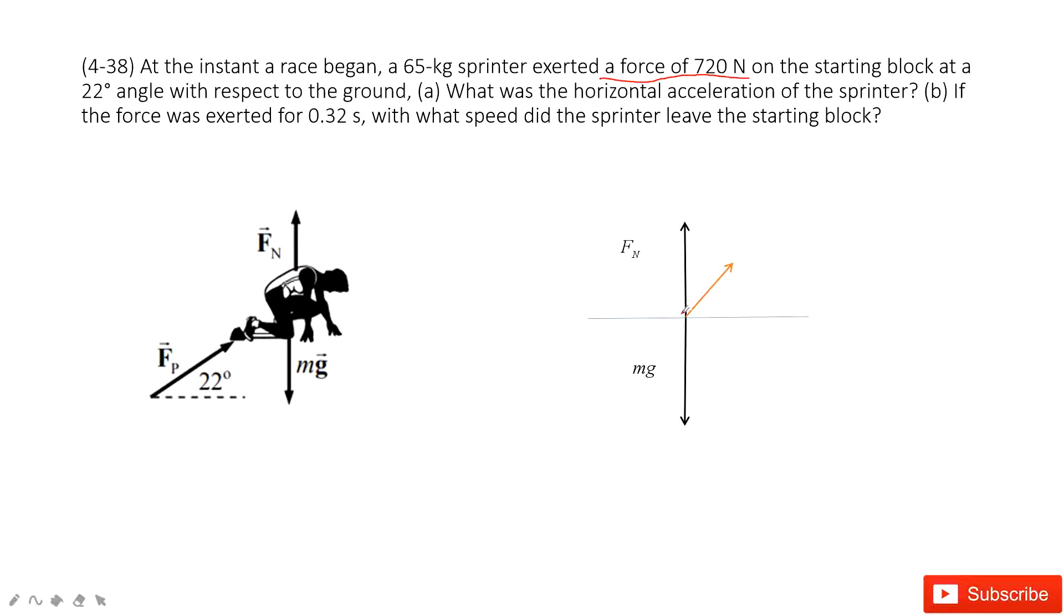And this is a pair of forces equal in magnitude but opposite in directions. This force is 720 newtons and the angle theta is 22 degrees. And then this is all the force we have.